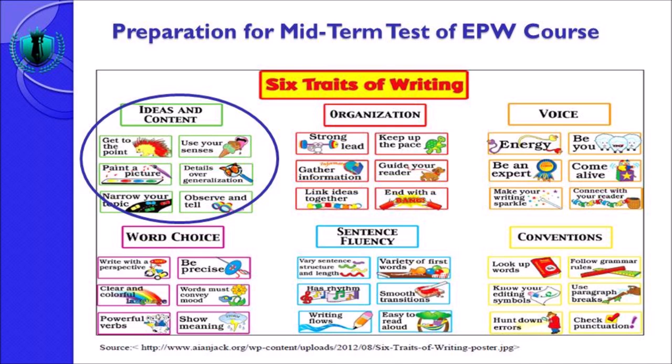Dalam menulis di bahasa Inggris tidak berputar-putar — tidak beating around the bush. Ketika anda menulis dengan bahasa Inggris anda harus get to the point. Kalau anda ingin membahas tentang topik dengan pedagogik bahasa Inggris melalui e-learning misalnya, then you have to get to the point — you have to write about it immediately in the first sentence of your paragraph. Aspek kedua adalah use your senses, maknanya anda menggunakan panca indera.